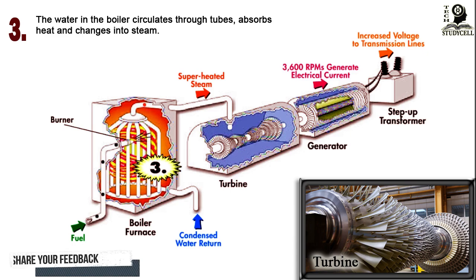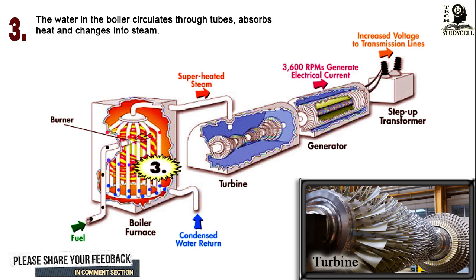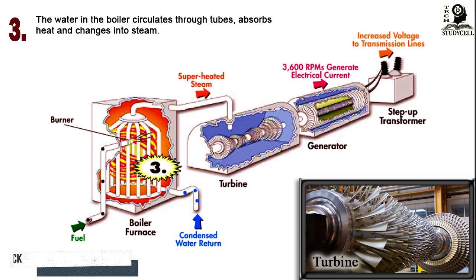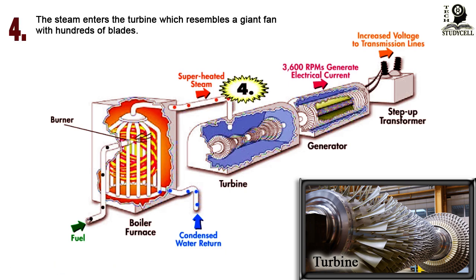A steam turbine resembles a giant fan with hundreds of blades. High-capacity power plants use different stages of steam turbines, such as the high-pressure turbine, intermediate-pressure turbine, and low-pressure turbine. To turn the steam turbine, you have to supply high-pressure, high-temperature steam at the inlet of the turbine.